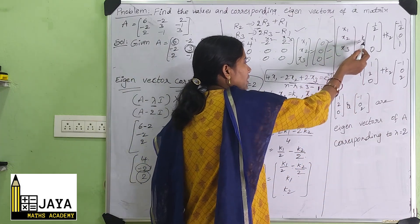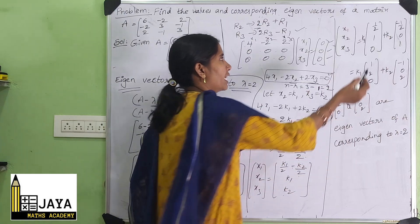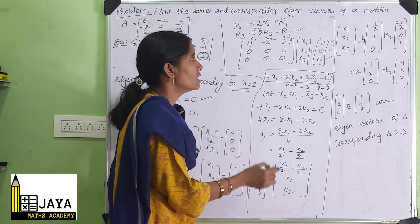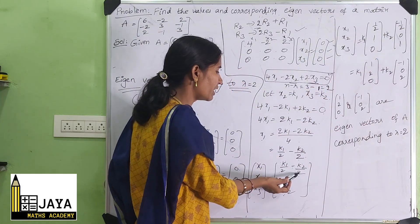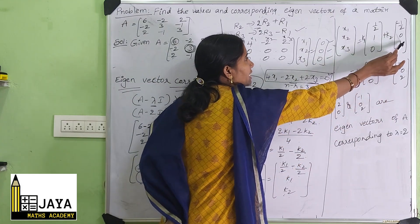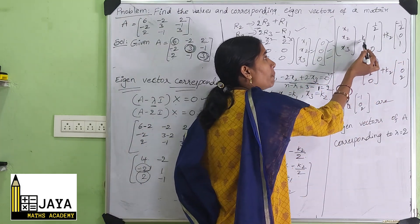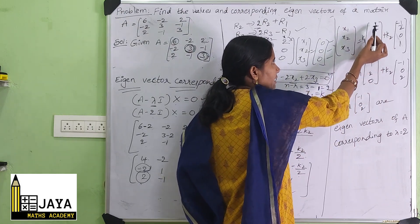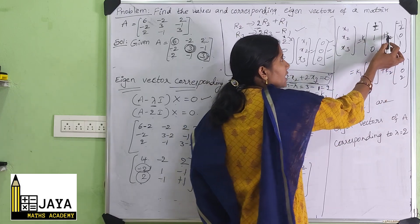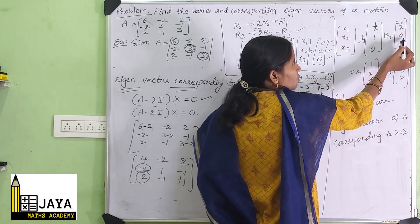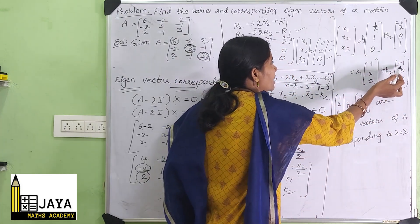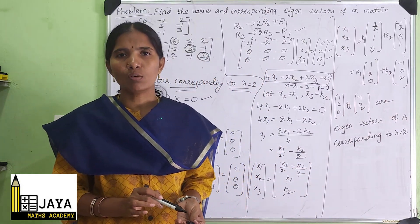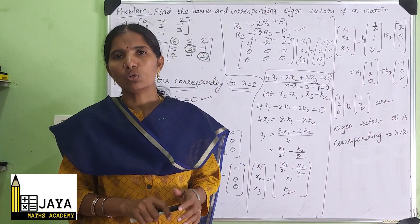So the two independent eigenvectors corresponding to λ = 2 are [1, 2, 0] and [-1, 0, 2]. If you have any doubts about this video, please comment. Thank you.